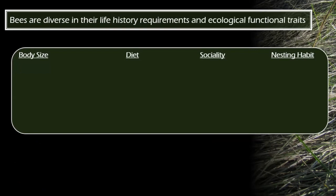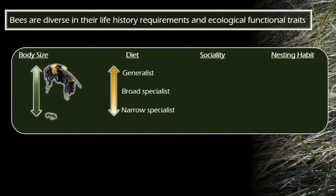Some of the ways bees lend their services is through different functional traits. I'll be focusing on four main groupings: body size, diet, sociality, and nesting habit. For body size, these can range from a big bumblebee to a small Halictus bee, which determines what flowers they can visit and provide pollination services to. For diet, some bees are generalists that visit many different plant species, while others are specialists that use only a specific type of plant, even down to a species.